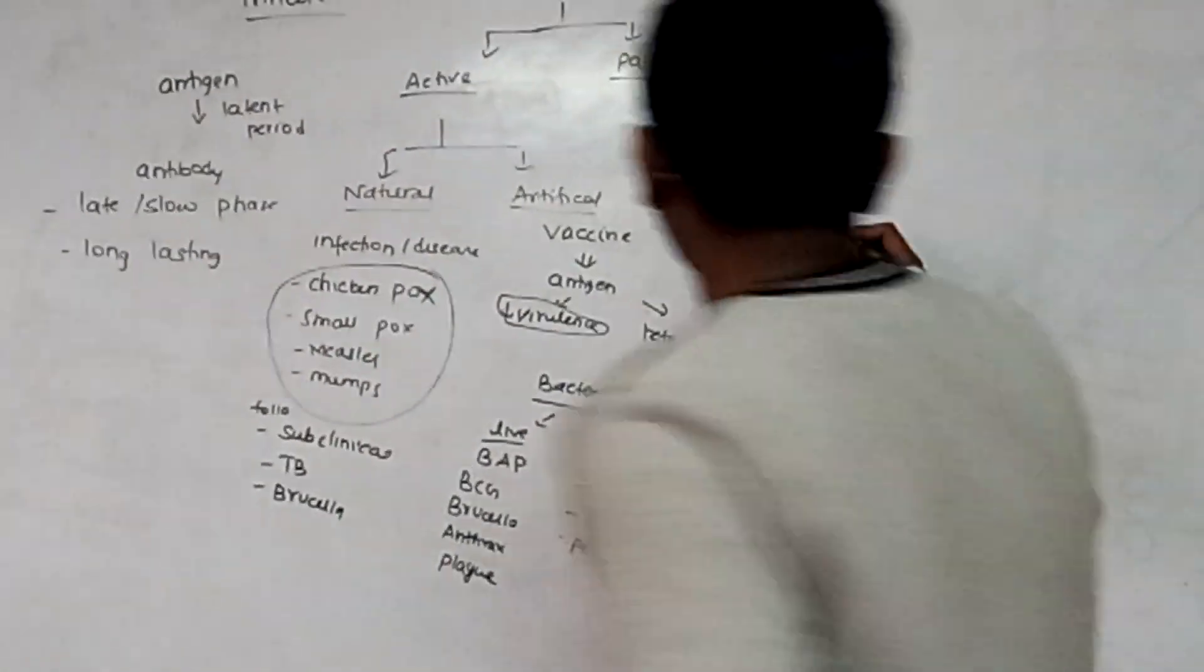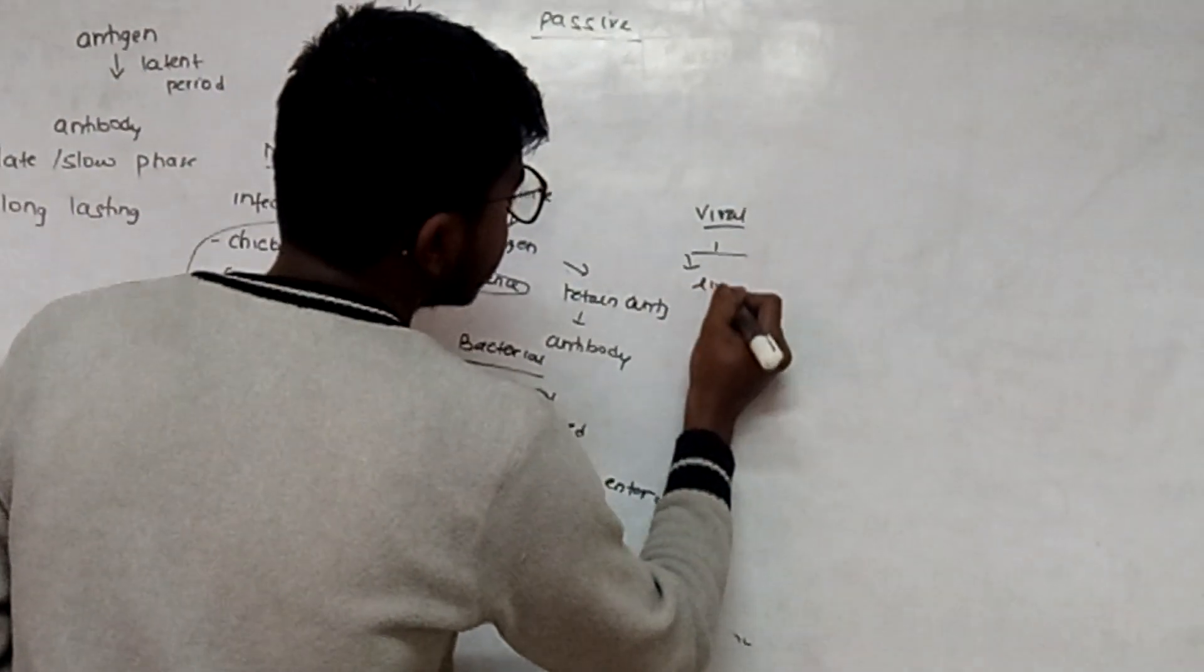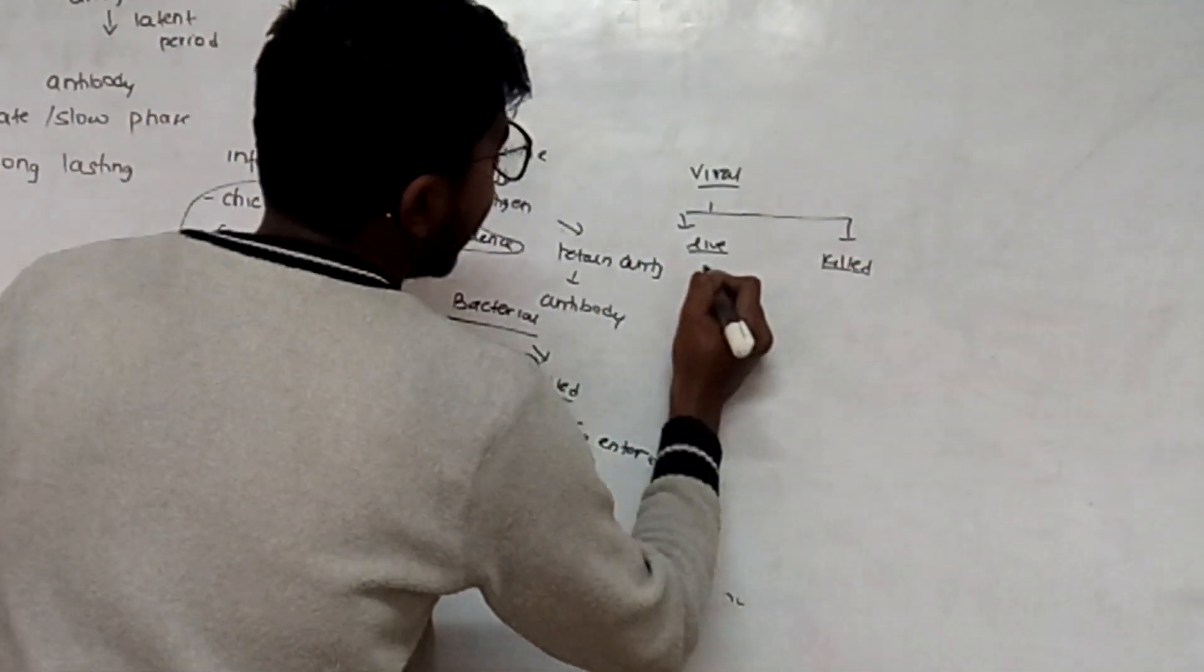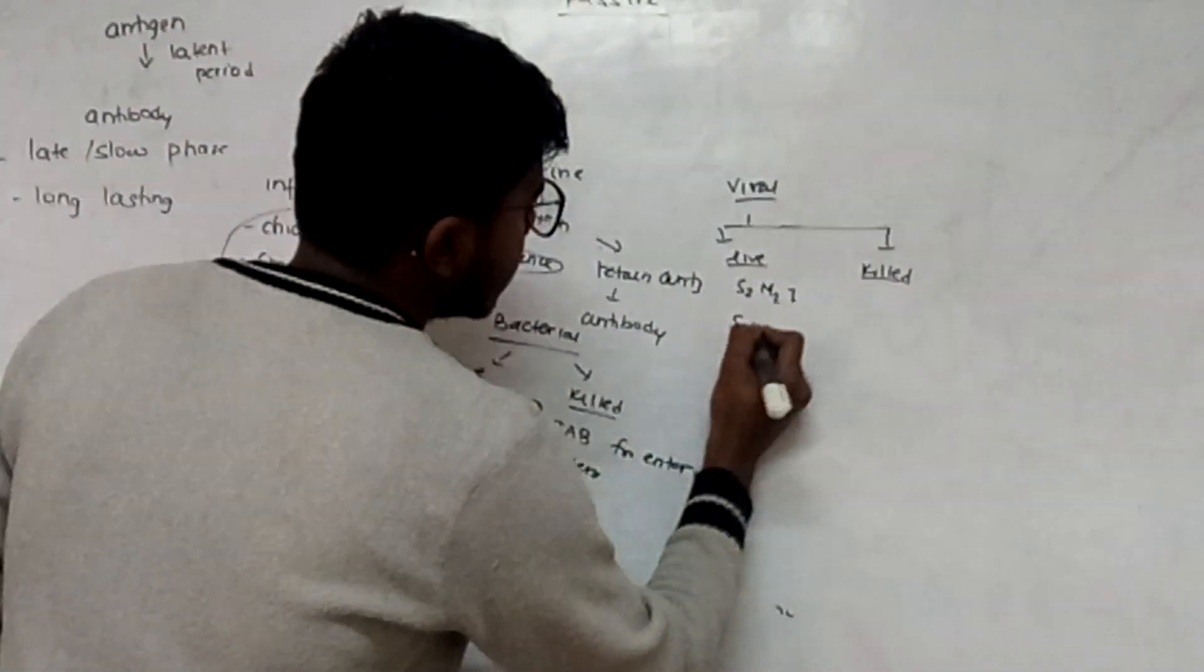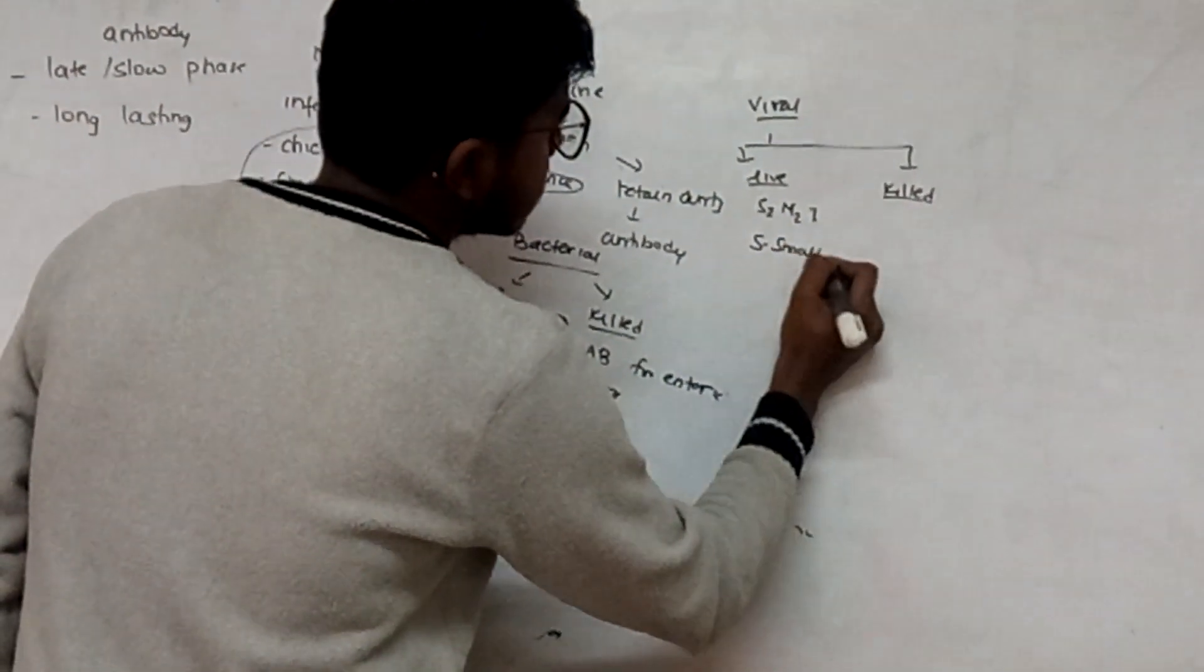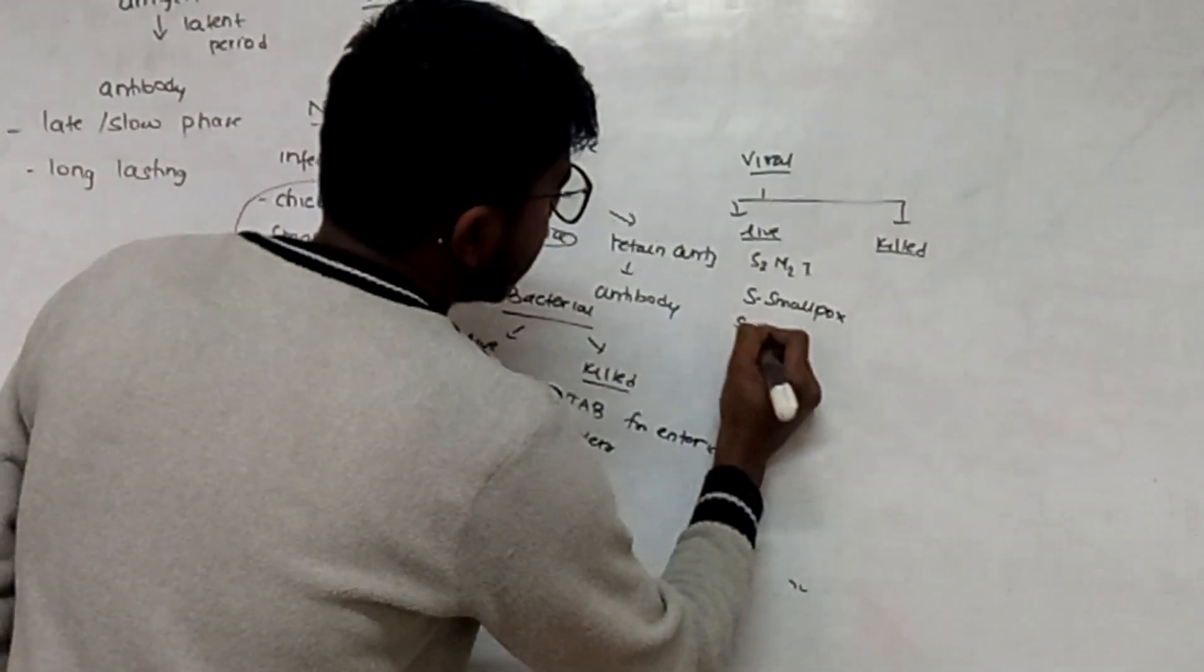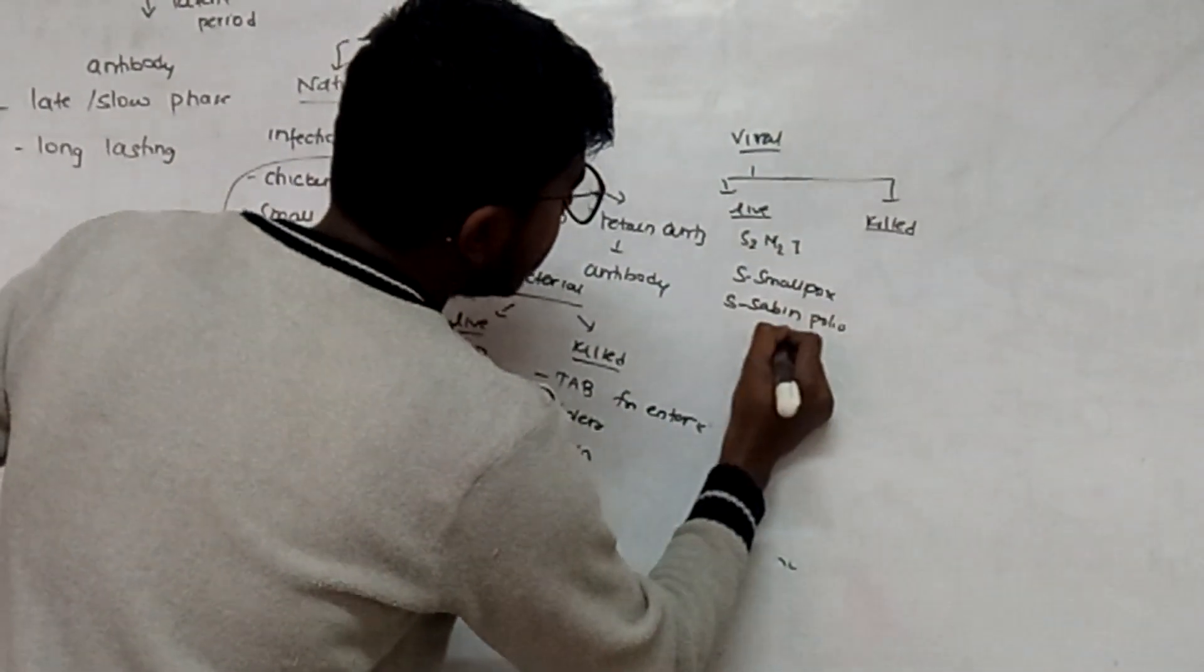Coming to viral cases - viral again has live vaccine and killed vaccines. Live is S2M2I - S for smallpox, S for Sabin polio that is oral, M for measles, M for mumps, I for influenza.